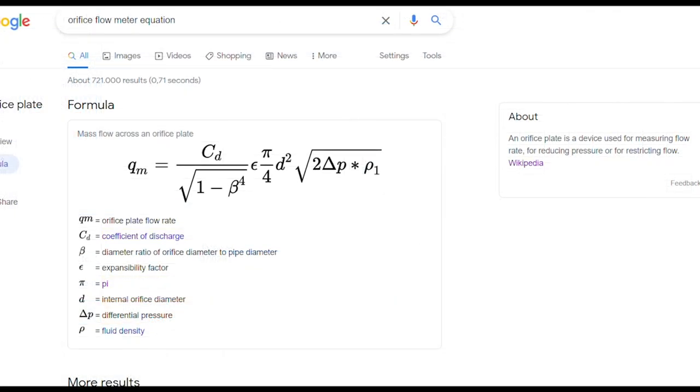Another example of where we use discharge coefficients is in the orifice equation for orifice type flow meters. Most of the equation for the mass flow rate through an orifice comes from a derivation of Bernoulli's equation similar to what we did at the beginning. Then in order to make it match experimental data, you can see it also has a coefficient of discharge in the front.